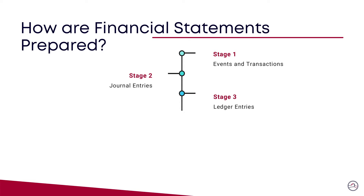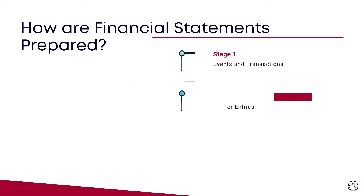From there, the information travels into ledgers, which are books of original entry and where different accounts pertaining to an organization are drawn up. At the end of each period, these accounts are closed and the listing of balances is shown in what's known as a trial balance.